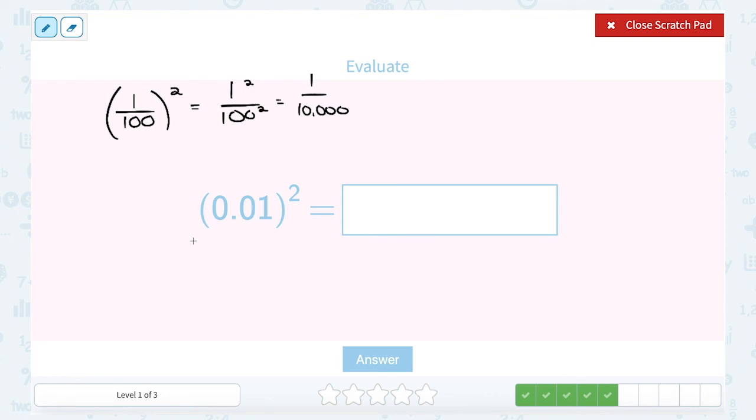Now, if you do the decimal version and you put 0.01 in your calculator and square it, you're going to get 0.0001. So notice these two answers are exactly the same, even though they look different.